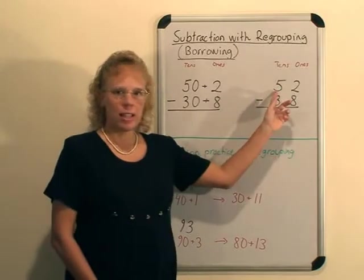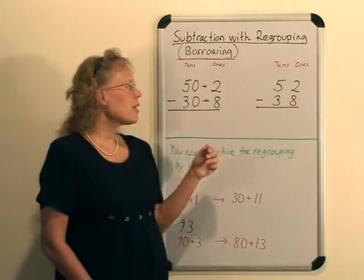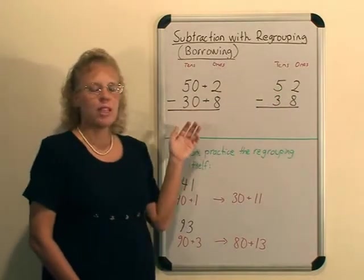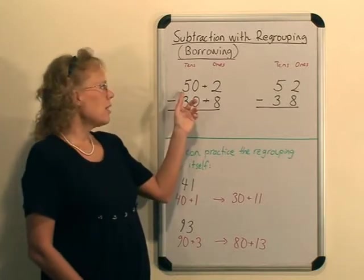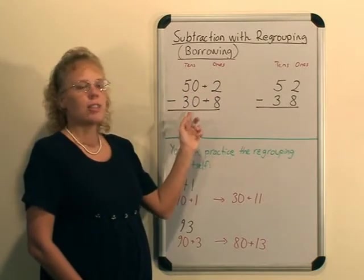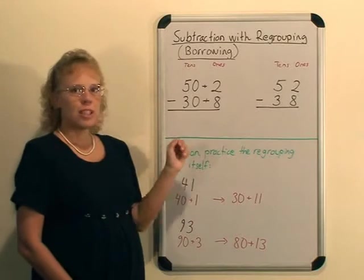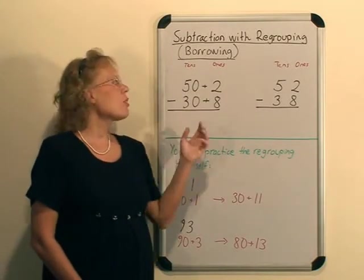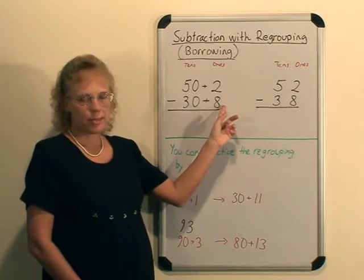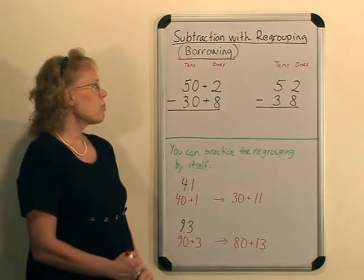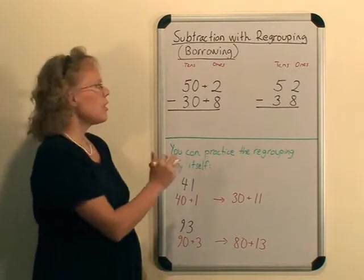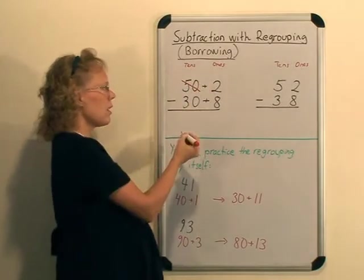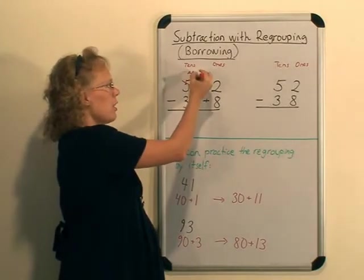Instead of writing normally like 52 minus 38, we break down 52 and 38 into the tens and ones and write it as 50 plus 2 and 30 plus 8. Now we're going to subtract ones and tens normally, but of course we know that from 2 you cannot take away 8.